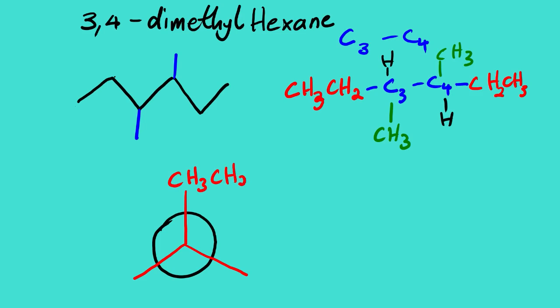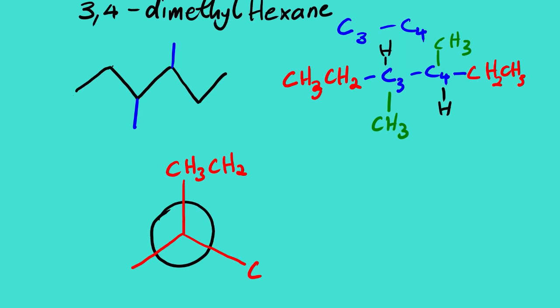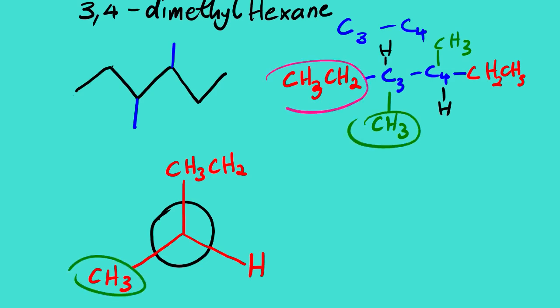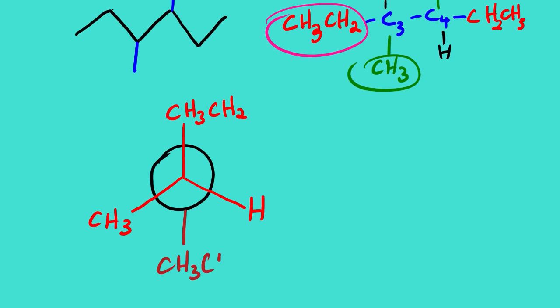For C3 we have CH3CH2 (ethyl group), a methyl group, and a hydrogen. For C4 we have an ethyl group, a methyl group, and a hydrogen. This is one representation — you can rotate it to find the most stable conformation by assessing the gauche interactions. This is one of the ways we can draw the Newman projection of 3,4-dimethylhexane.